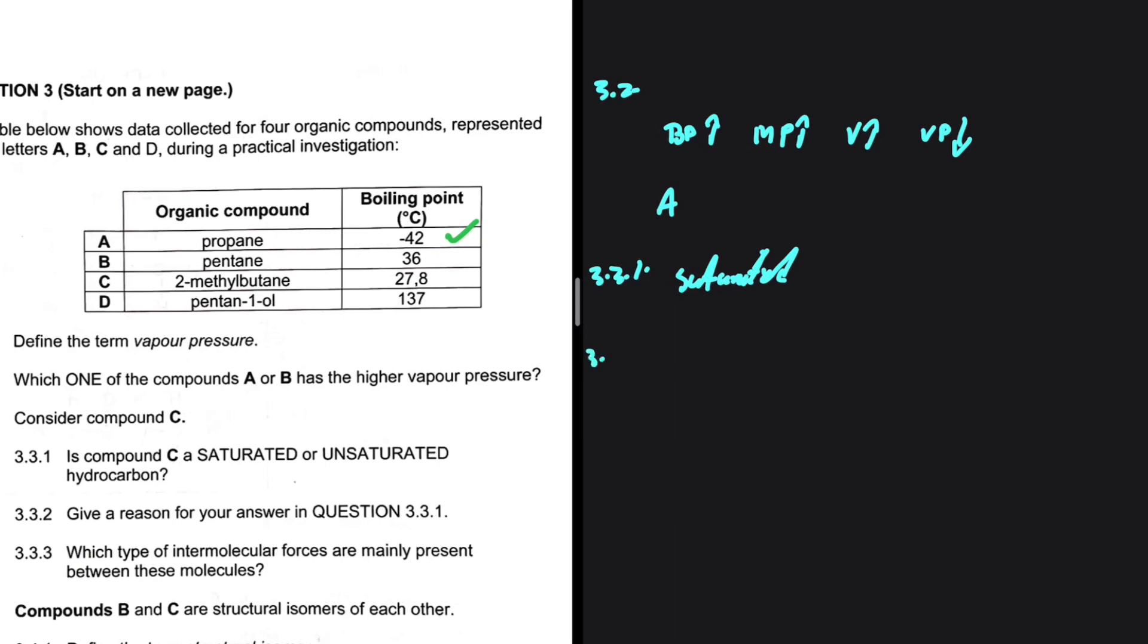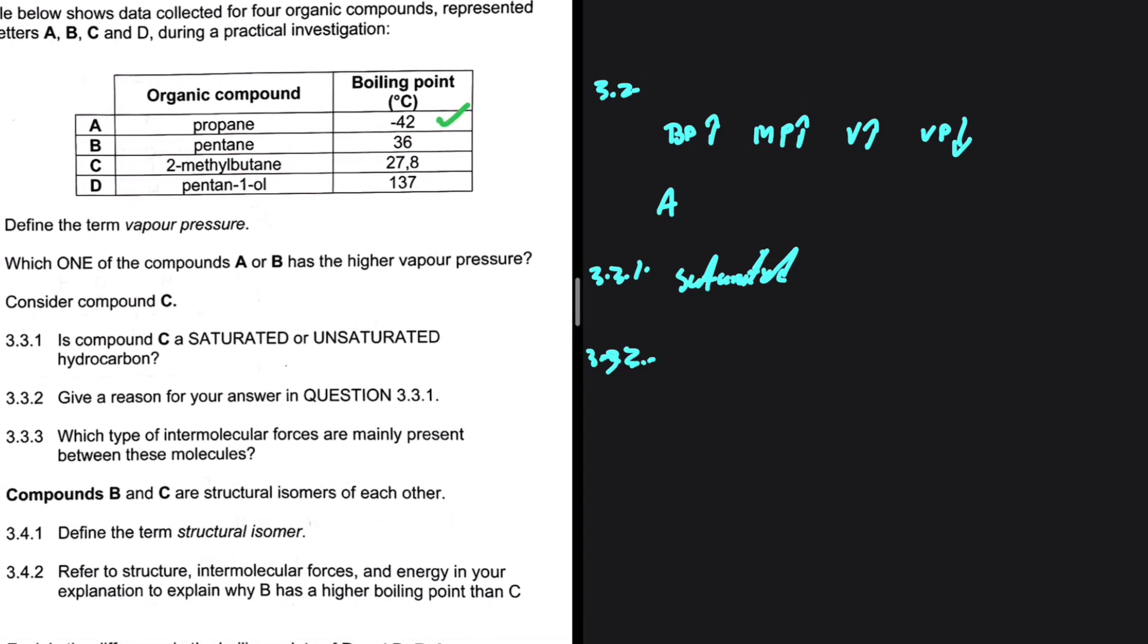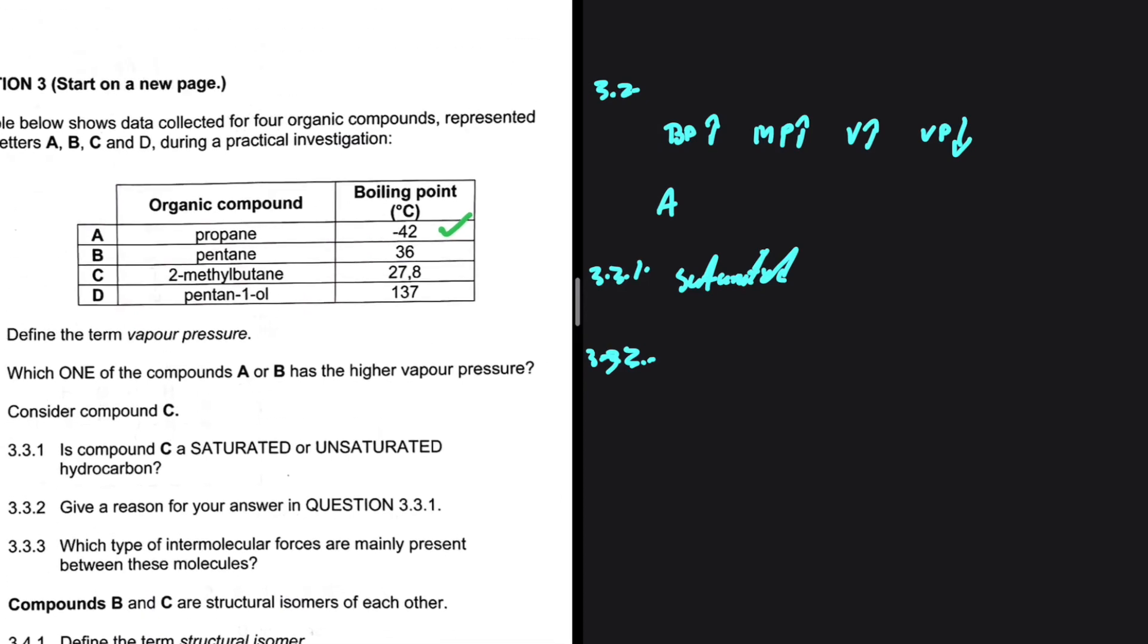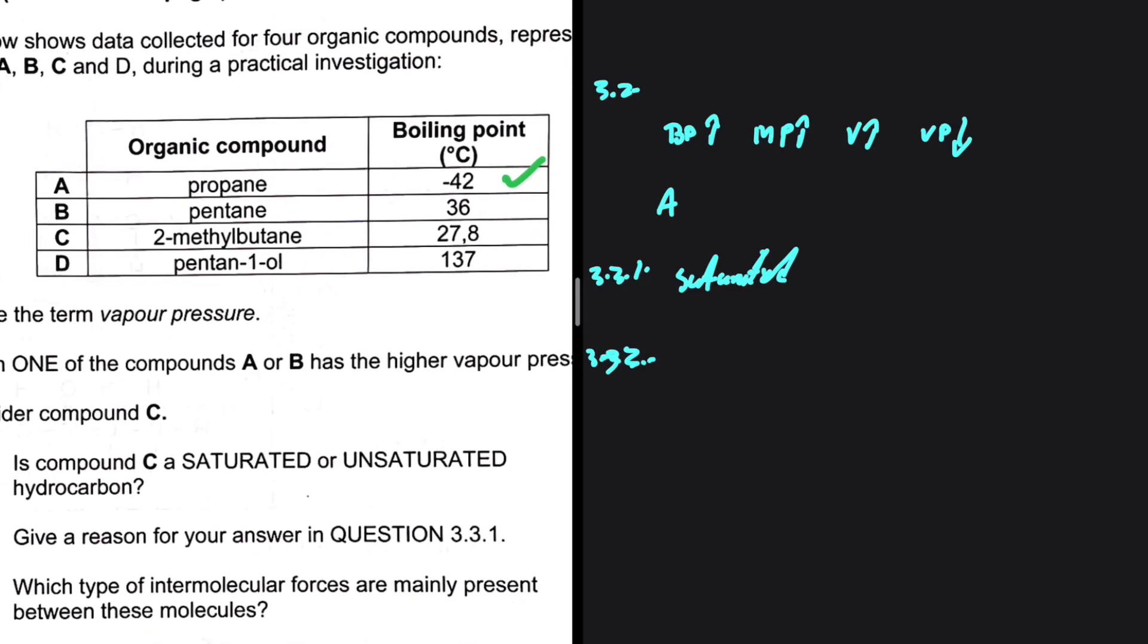3.3 because we've just answered 3.3.2 there. Which type of intermolecular forces are mainly present between these compounds? Well, the compounds on our table, we have propane, pentane,